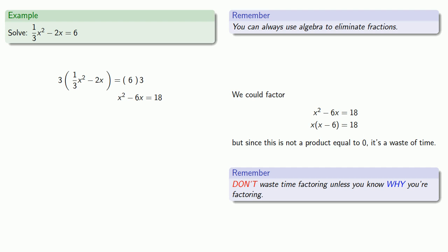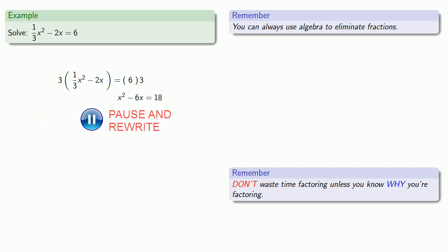We want to get a product equal to zero, we have to have something equal to zero to begin with. So we'll rewrite our equation. And now, if we factor, we'll get a product equal to zero, which will help us solve the problem. So now we can try to factor.